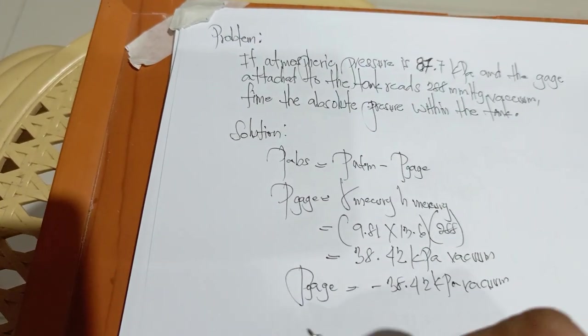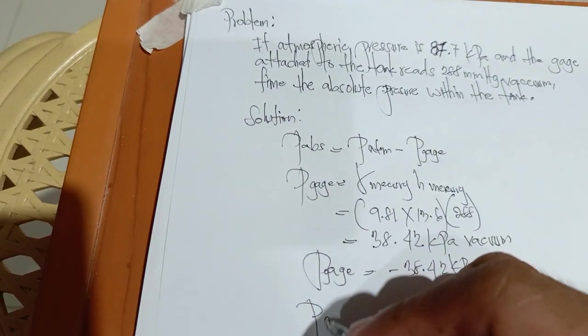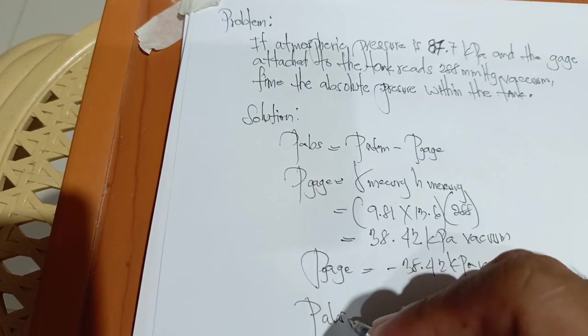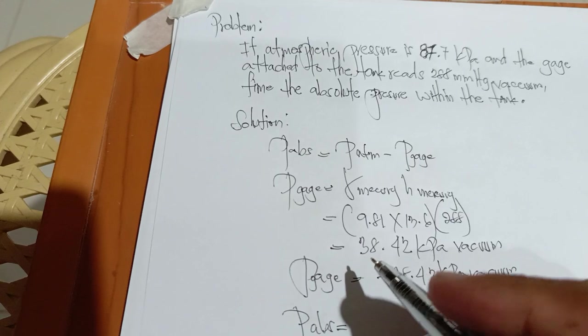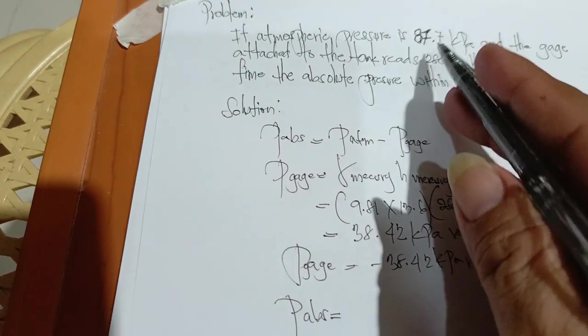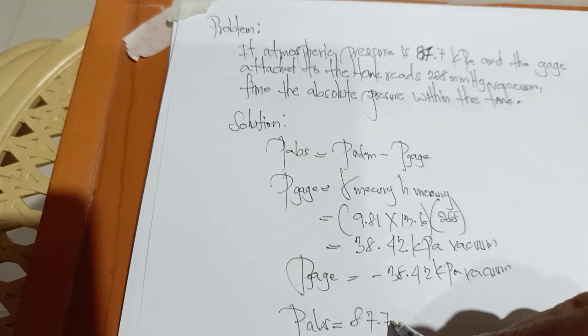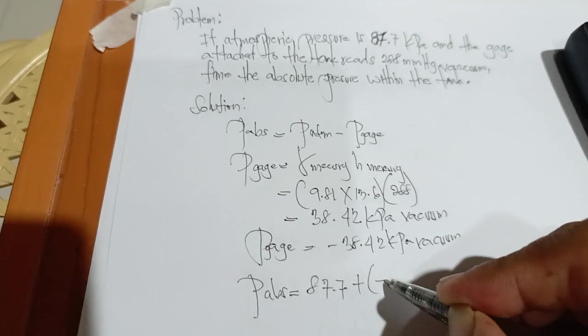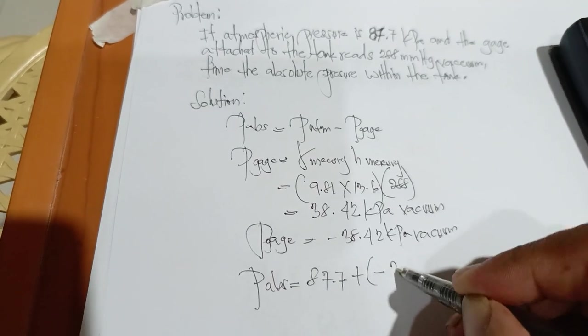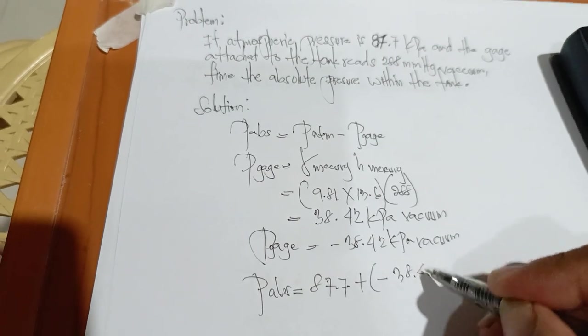Next, pressure of absolute is equals 87.7 plus minus 38.42.